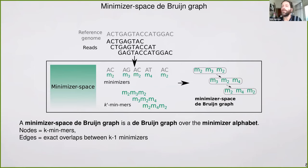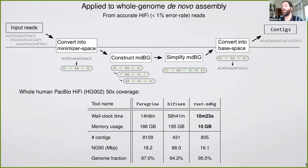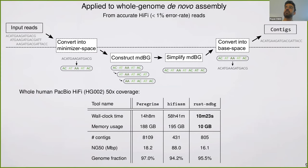Alex Leonard asks: is the lower N50 due to limitations of minimizer space, and could a more involved algorithm reach base-space assembler N50? That's a great question. I suspect it's a combination — in some low-complexity regions it's hard to find universe minimizers, and we also used very rudimentary graph simplification techniques. I'm pretty sure if we put the work in there, we could reach higher N50s.